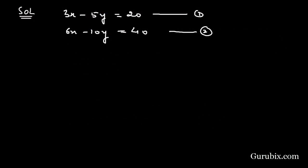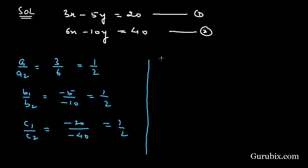Now we shall find the ratio a1 over a2, that is 3 over 6, which is 1 over 2. b1 over b2, that is minus 5 over minus 10, this means 1 over 2. c1 over c2, that is minus 20 over minus 40, this means 1 over 2.